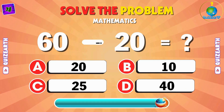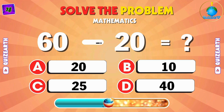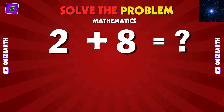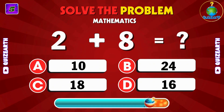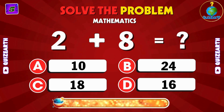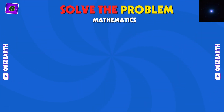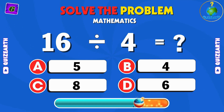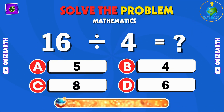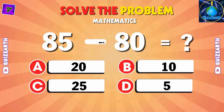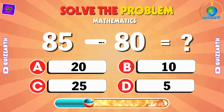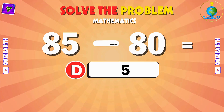Subtract 20 from 60. Answer: 40. Next up, add 2 and 8 — what's the total? A: 10. What's 16 divided by 4? B: 4. Subtract 80 from 85. D: 5.